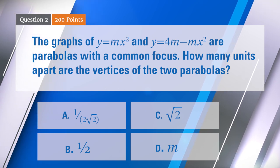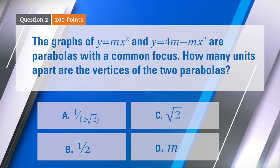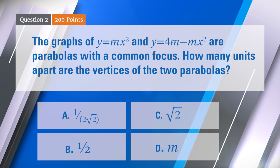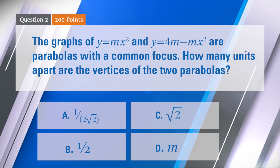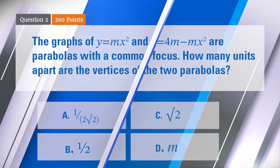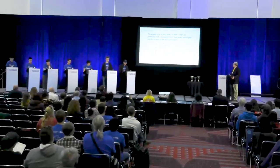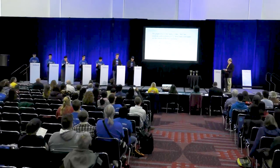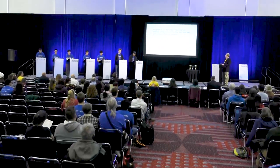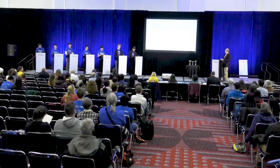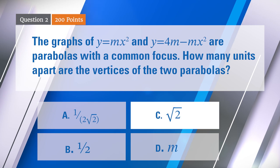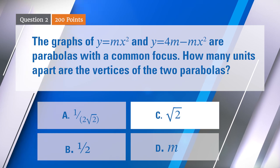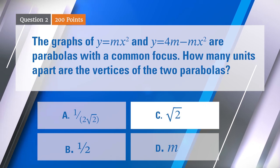All right, we'll pause for a second — maybe we didn't give you enough time, but now it's gone, so we'll see how this one went. Six people chose C, square root of 2; one chose A, 1 over 2 square root of 2. The correct answer is C, square root of 2. Very good.